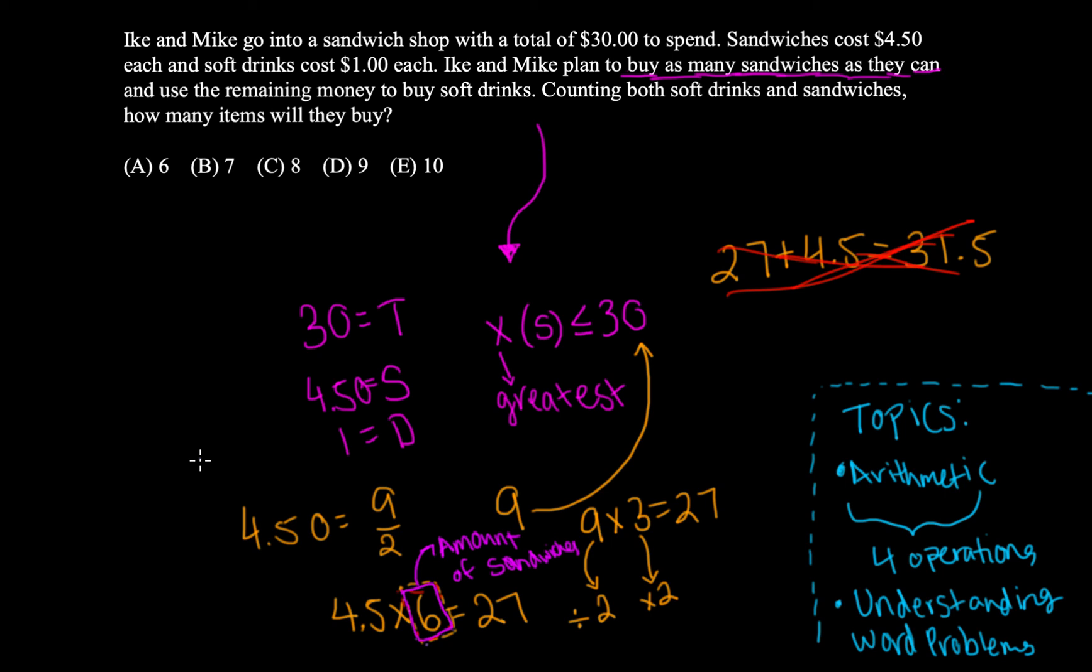So we also need to find out the amount of soft drinks. So don't go ahead and just circle A. So once you have the total that they have spent on sandwiches, you can see how much they have left. Because they're saying they're going to use the remaining money.